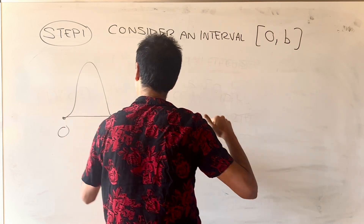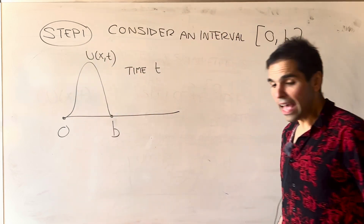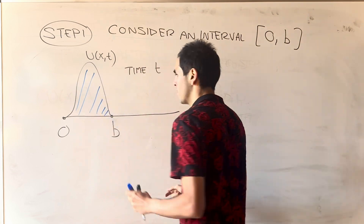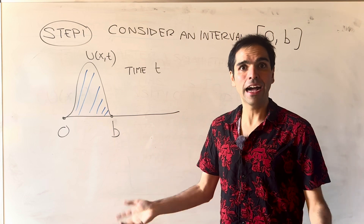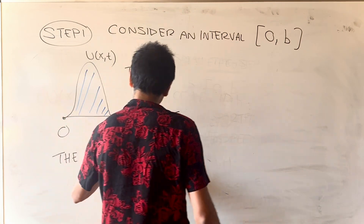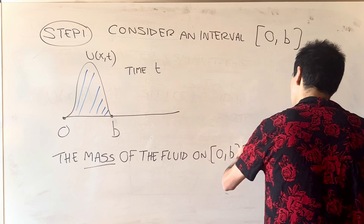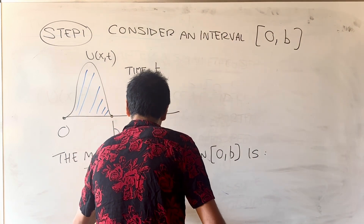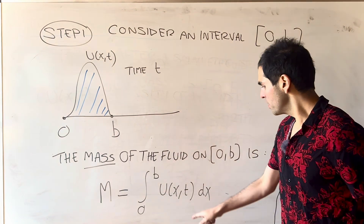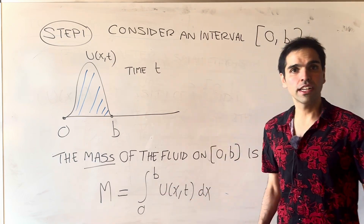Maybe it looks like that, and by the way this is at time t — we have this density. Then the question is: what is the mass of that fluid on that interval? Well, from physics or calculus, we know that the mass is just the integral of the density. So the mass of the fluid on [0, b] is simply the integral from zero to b of u of x comma t dx. We fix the time t and integrate the density over the interval zero to b.